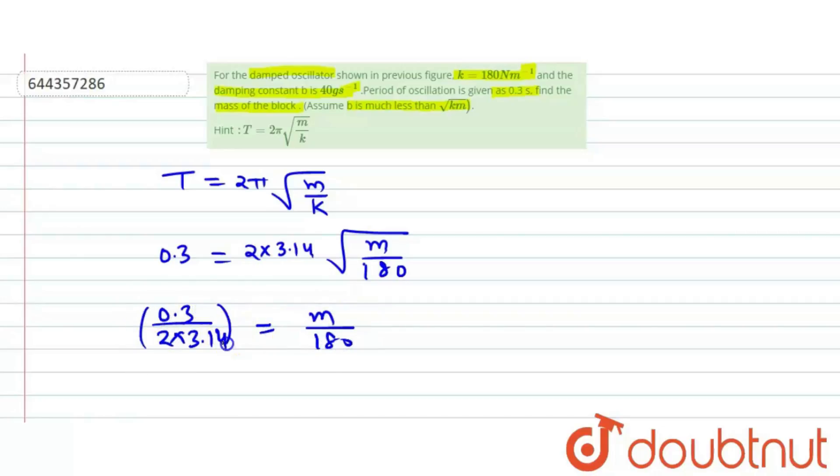So this implies m equal to 0.3 divided by 2 into 3.14 square into 180.